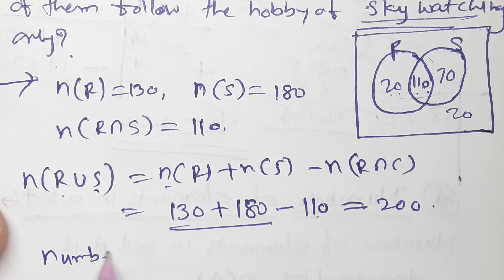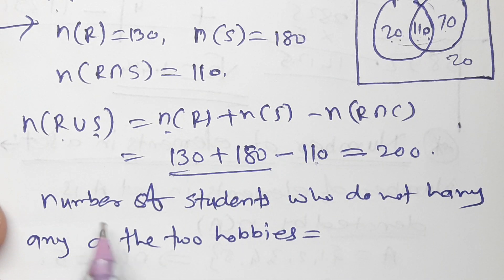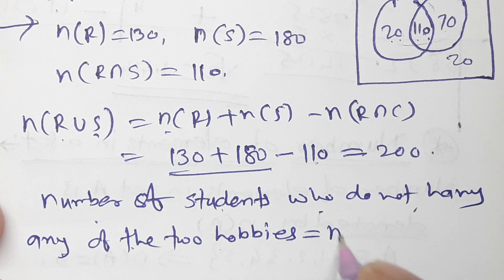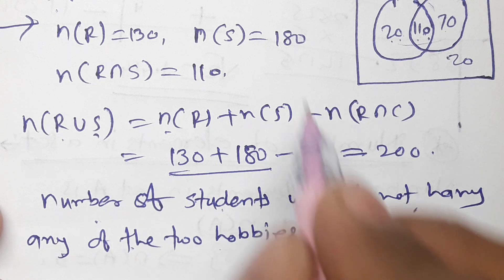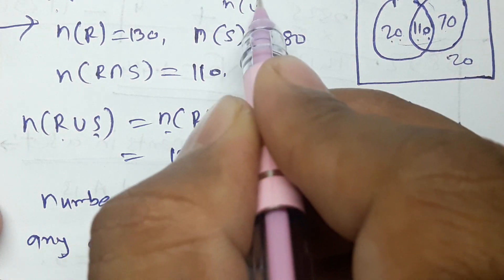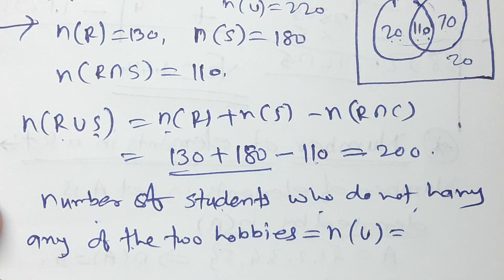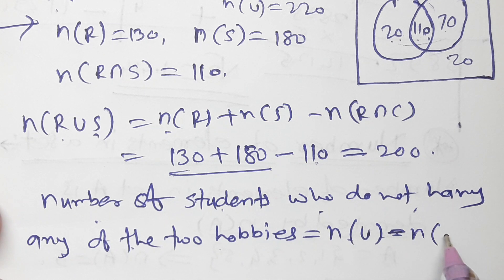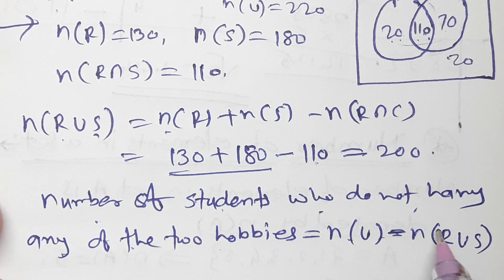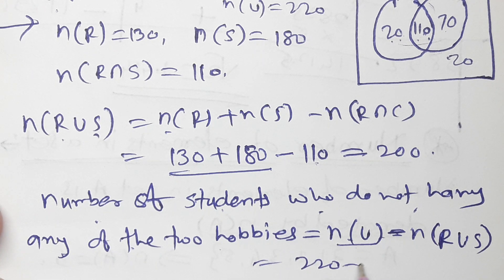Number of students who do not have any of the two hobbies = number of universal set minus number of R union S = 220 minus 200 = 20 students.